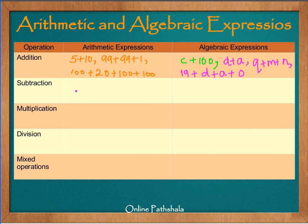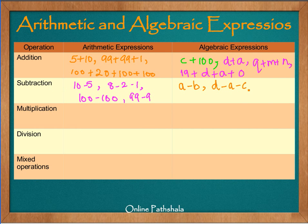Now let us take examples of subtraction. For arithmetic expressions, we can write: 10 minus 5, 8 minus 2 minus 1, 100 minus 1, 100 minus 100, or 99 minus 9. These are all examples of arithmetic expressions using subtraction. For algebraic expressions involving subtraction, we can write: a minus b, or d minus a minus c minus b minus f, or 100 minus a, or a minus 100 minus b.